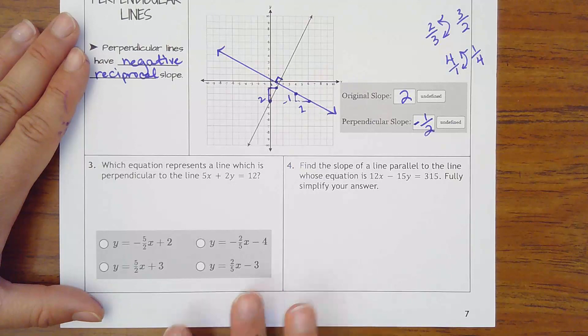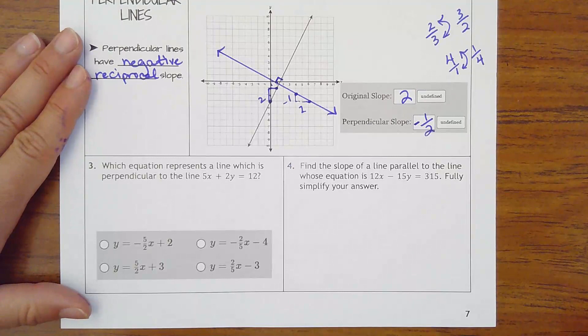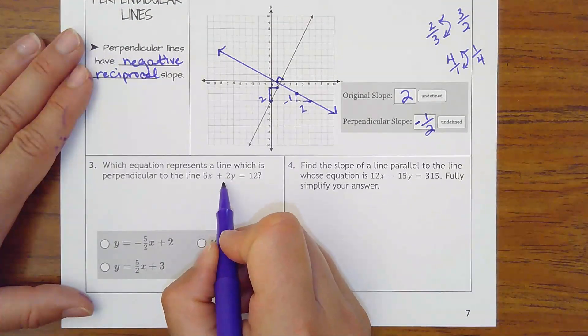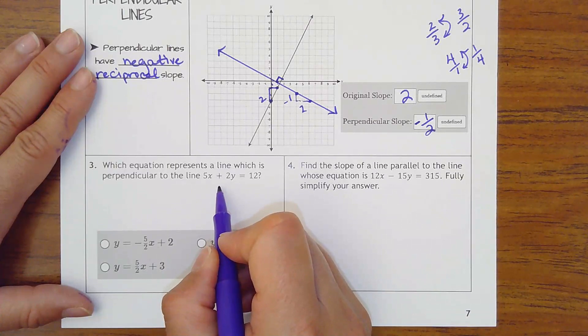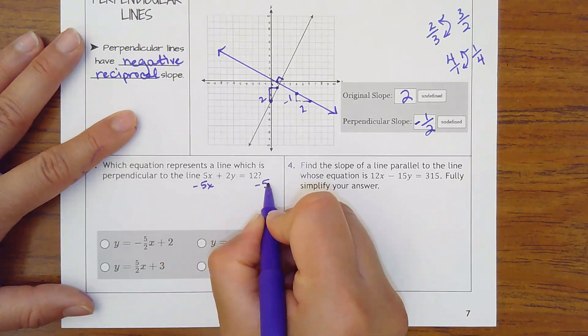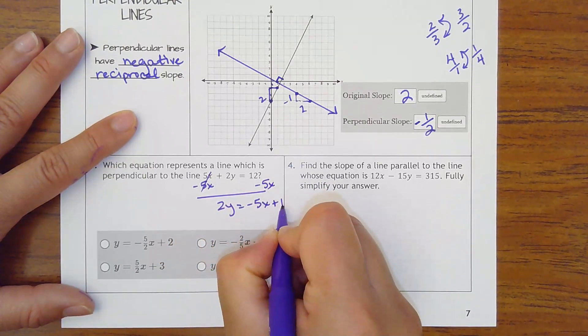So number 3 says, which equation represents a line which is perpendicular to the line 5x plus 2y equals 12. Now what I don't like about this is this is in standard form. We have to have it in y equals mx plus b. So let's move the 5x over to get 2y equals negative 5x plus 12.